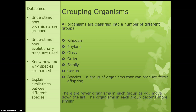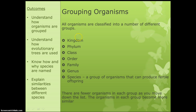The way we group them is: first we divide them into five kingdoms, then the kingdoms are split into phylums, then class, then order, then family, then genus, then species. You need to know this order — it starts from kingdom at the top and goes all the way down to species. They often give you lists with one or two missing and you have to fill in the gap, so just memorize these in order.